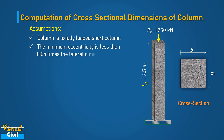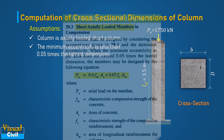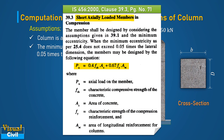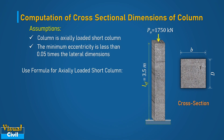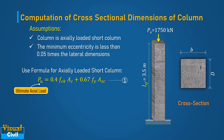And second, the minimum eccentricity is less than 0.05 times the lateral dimensions of the column. Based on these assumptions, the equation given in clause 39.3 of IS456 will be used for the design of the column. In this equation, PU is ultimate axial load, AC is area of concrete, and ASC is the area of longitudinal reinforcement.